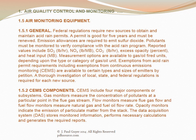CEMS components include four major components or subsystems. Gas monitors measure the concentration of pollutants at a particular point in the flue gas stream. Flow monitors measure flue gas flow, and fuel flow monitors measure natural gas and fuel oil flow rate. Opacity monitors indicate the emissions of particulate matter from the stack, and the data acquisition system, abbreviated DAS, stores monitored information, performs necessary calculations, and generates the required reports.